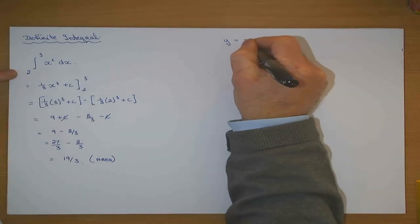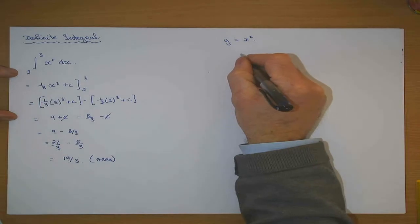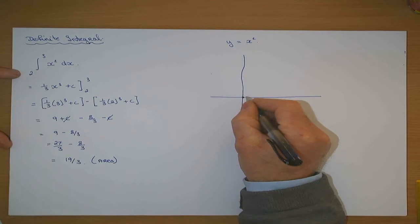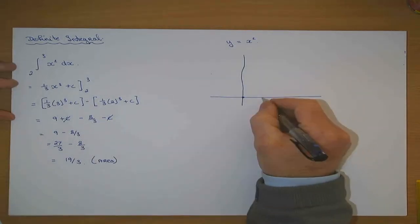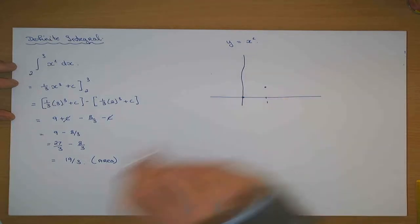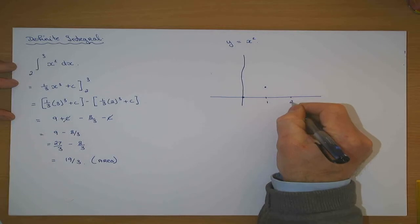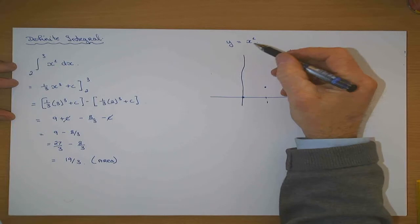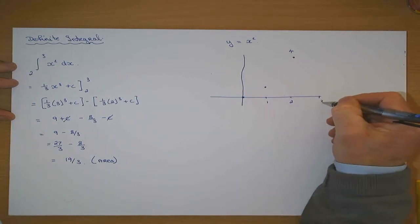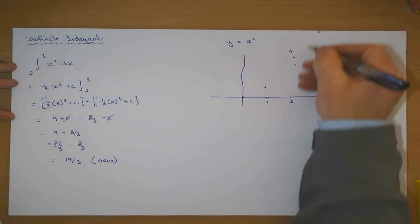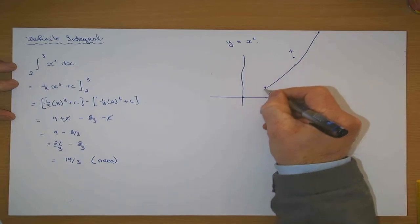If I drew the graph y equals x squared, it would have the point (0, 0). When x is one, y would be one, giving the point (1, 1). When x is two, y is x squared — so y is four. When x is three, y would be nine. So plotting those points, it would have the shape of a curve — it's a quadratic graph.